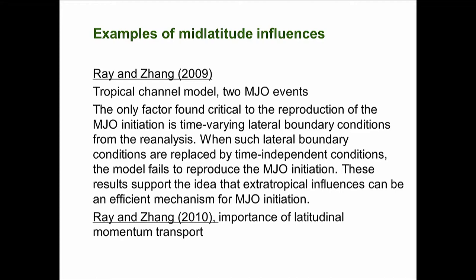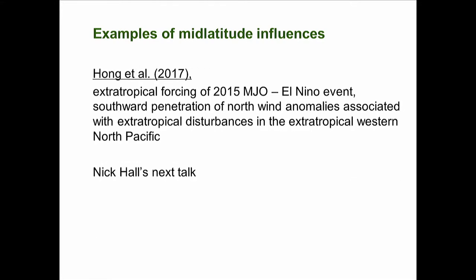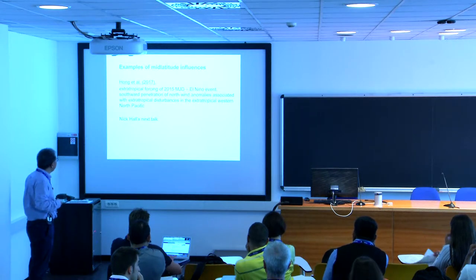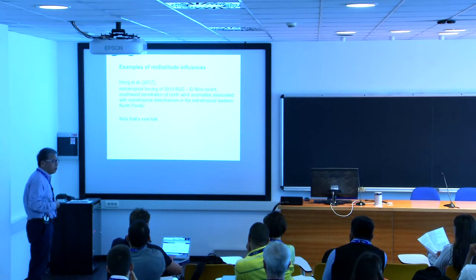Later studies looked at mechanisms and found that momentum transport from the mid-latitudes has a big contribution to MJO initialization. Another example is by Hong et al., a very recent paper, which found that the southward penetration of northward wind propagated from the mid-latitudes to the tropics influenced the generation of the MJO and El Niño in 2015. Nick Hall will talk about more examples of mid-latitude impact on the MJO.